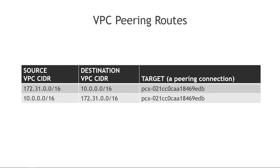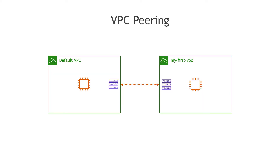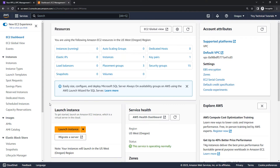With that brief overview, here's what we're going to build. I've got a default VPC — just like you do, that gets created when you create your AWS account — and then I created a second VPC called my first VPC. We're going to launch an instance in each one, see that initially they can't talk to each other, then set up the peering connection so they can. We'll also have to update the route tables so that traffic can go both directions.